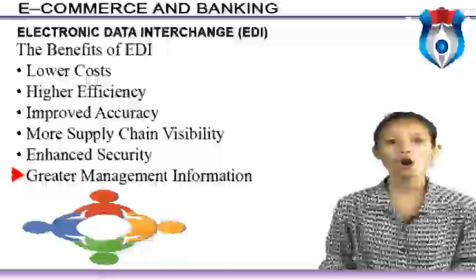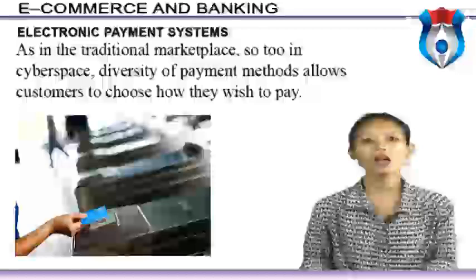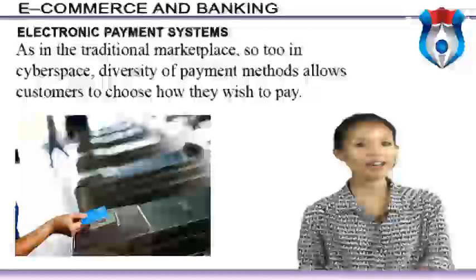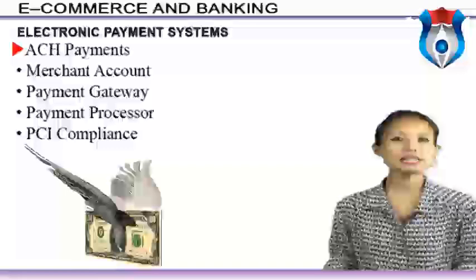As in the traditional marketplace, so too in cyberspace, diversity of payment methods allows customers to choose how they wish to pay. Acceptable means of payment include: electronic checks, electronic credit cards, electronic cash, smart cards, person-to-person payments, electronic fund transfer (EFT), e-wallets, and purchasing cards. A few things to know about online payment systems: ACH payments are electronic credit and debit transfers allowing customers to make payments from their bank accounts for utilities, mortgage loans, and other types of bills.